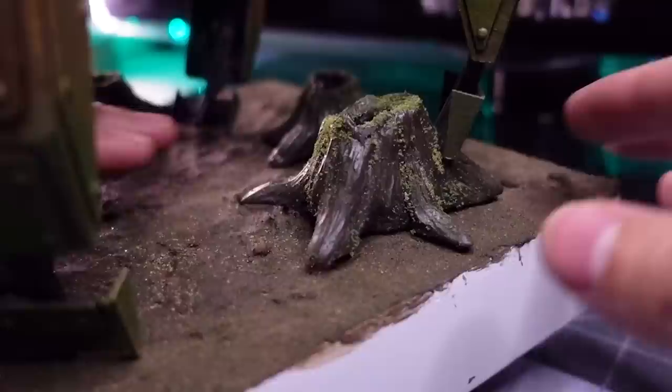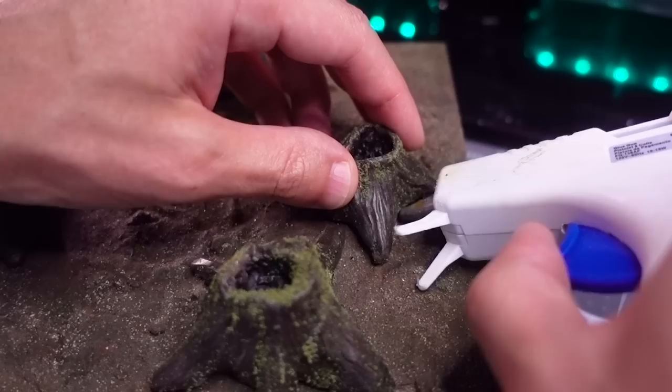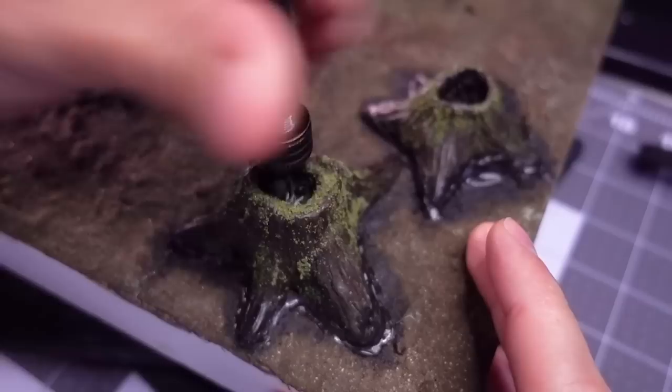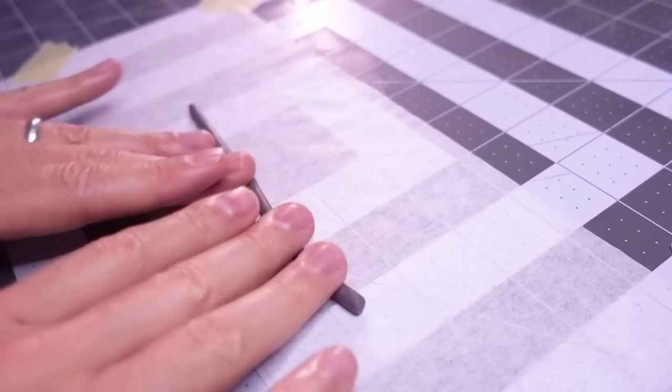Now, a more planned version of this diorama would have had me placing these trunks when the terrain paste was still wet, resulting in a snug fit, but instead I had to go back and fill those ugly gaps with hot glue, then paint the glue after that. But at least I had the sense to drill holes in the stumps all the way to the wood base, so that any trapped air bubbles from the resin wouldn't ruin the resin pour, but instead just rise up through the stumps.